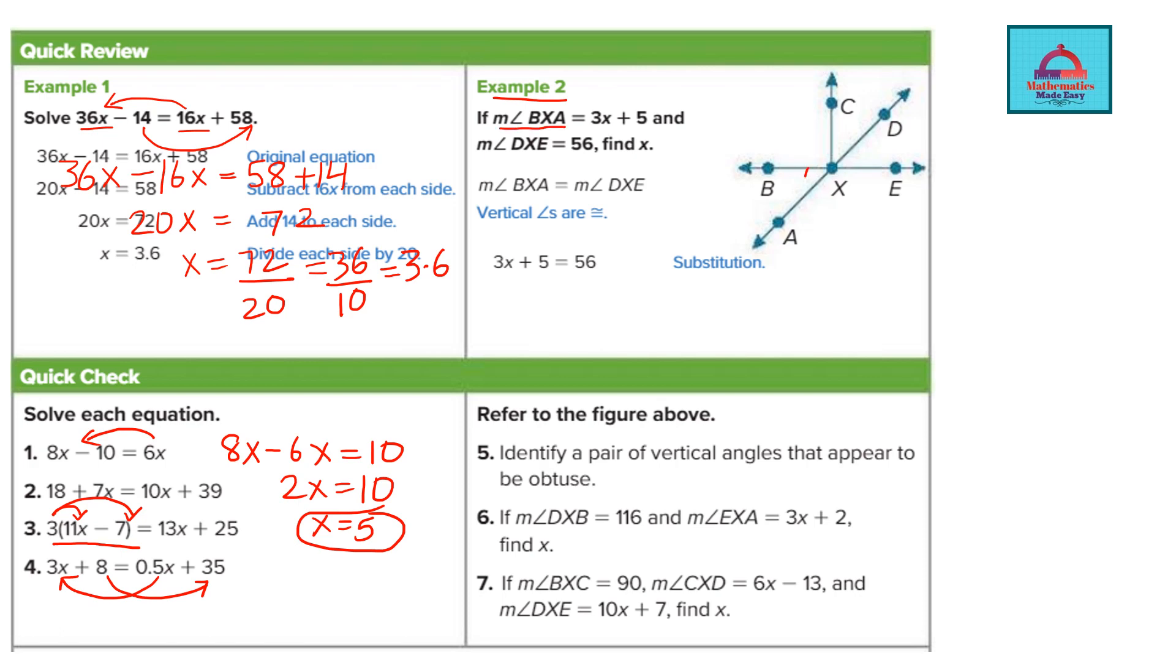So look at the measure of angle BXA. BXA that means this angle it is given to be 3x plus 5 and then DXE. DXE is this angle which is given to be 56.